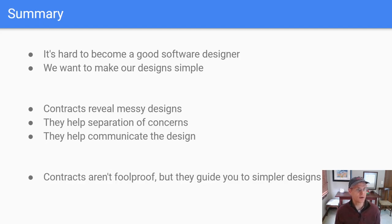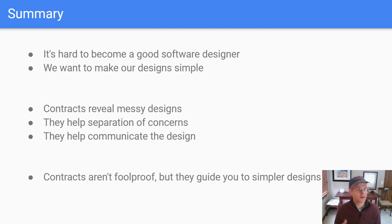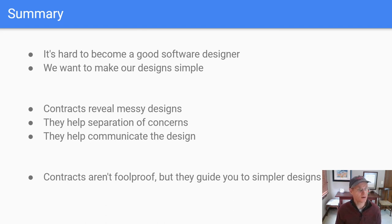In summary, it's difficult to become a good software designer. If I could wave a magic wand and get you there immediately, I would. What I'm talking about here with contracts, I believe will help accelerate you towards becoming a better software designer. Thinking about contracts is a mindset that helps us make our design simple: the contracts reveal the messy parts, they help us separate out different concerns to the extent that we can, and they help a team talk about and communicate the design so everyone understands how it's supposed to work. The contracts aren't foolproof, but they can guide you towards simpler designs and help your desire to make things simple — and let you achieve that better.